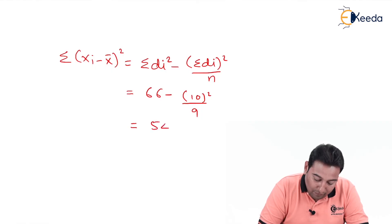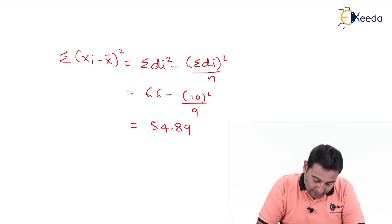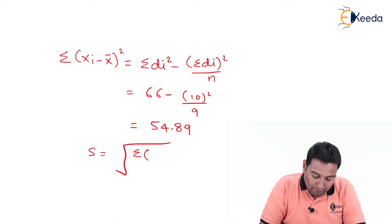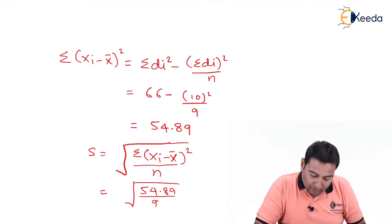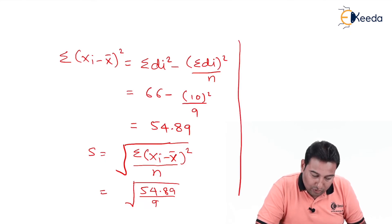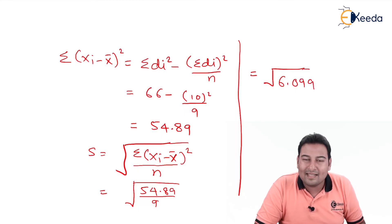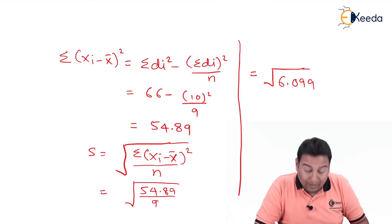Now we compute Σ(xi - x̄)² = Σdi² - (Σdi)² / n = 66 - (10²)/9 = 66 - 100/9, which gives 54.89. Then S = √(54.89 / n) = √(54.89 / 9) = √6.099. Solve this on a calculator. We are now done with S.